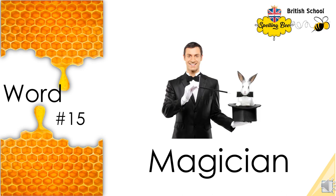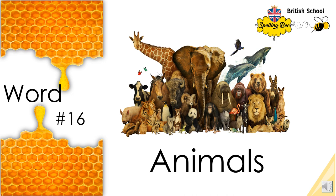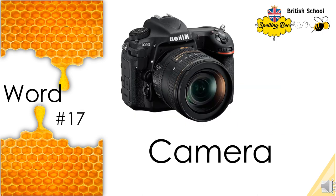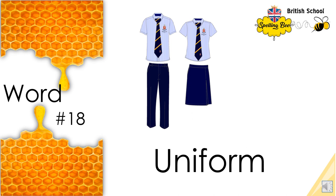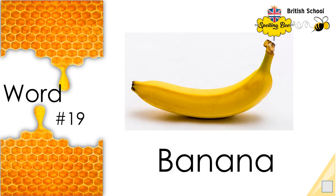Magician: M-A-G-I-C-I-A-N. Magician. Animals: A-N-I-M-A-L-S. Animals. Camera: C-A-M-E-R-A. Camera. Uniform: U-N-I-F-O-R-M. Uniform. Banana: B-A-N-A-N-A. Banana.